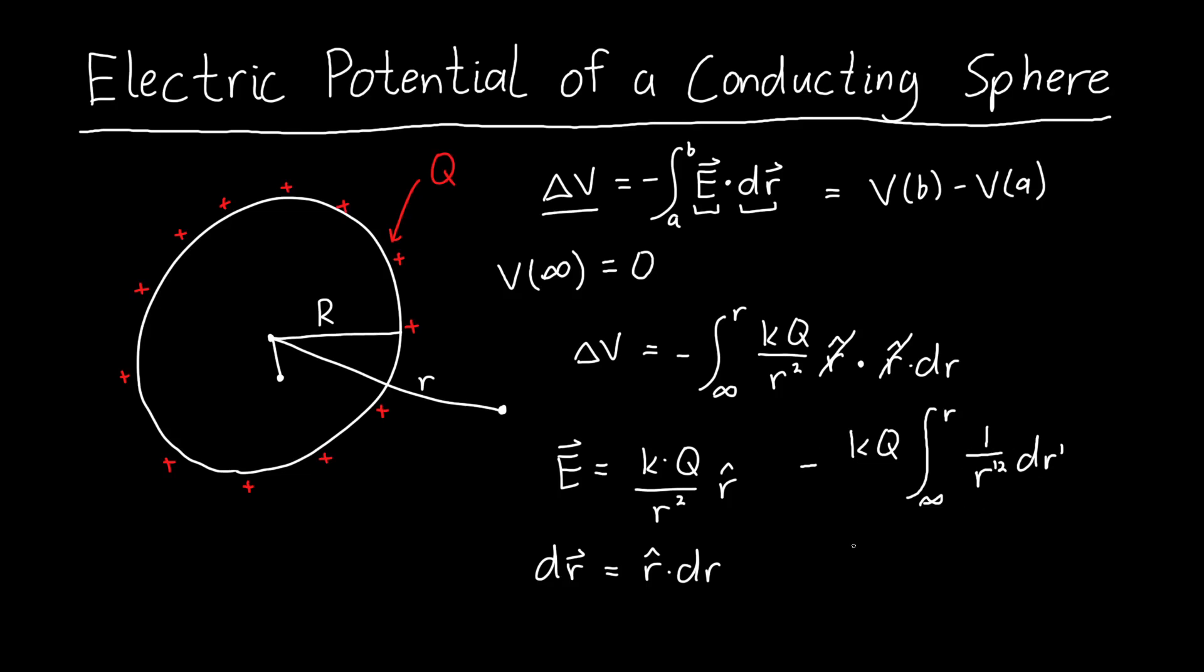So the integral of 1 over r squared is just negative 1 over r, and so the two negative signs will cancel. And we've got k q over r, and we plug in, or r prime if you like, and we plug in r prime equals infinity, and r prime equals r, and so the infinity just gives us zero. And so this ends up being k q divided by r. And so this is the potential difference between infinity and some point r. Or if we assume that the potential at infinity is zero, this is the potential at some distance r away from the sphere.